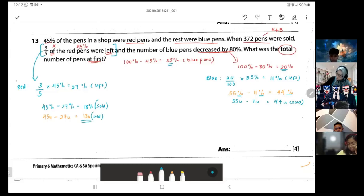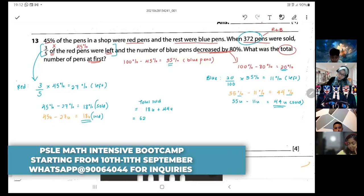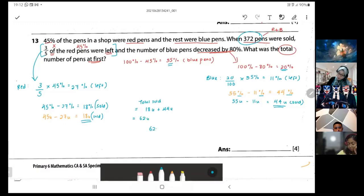So this is sold and this is sold, and I know this is sold, right? So total sold equals to 18 units plus 44 units, which is 62 units. 62 units represent 372, so one unit is 372 divided by 62, which equals six.